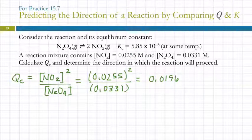So that tells me that this reaction is going to proceed in the reverse direction. It's going to make more of the N2O4 and you'll have less of the NO2 so that this ratio can equal the equilibrium constant.